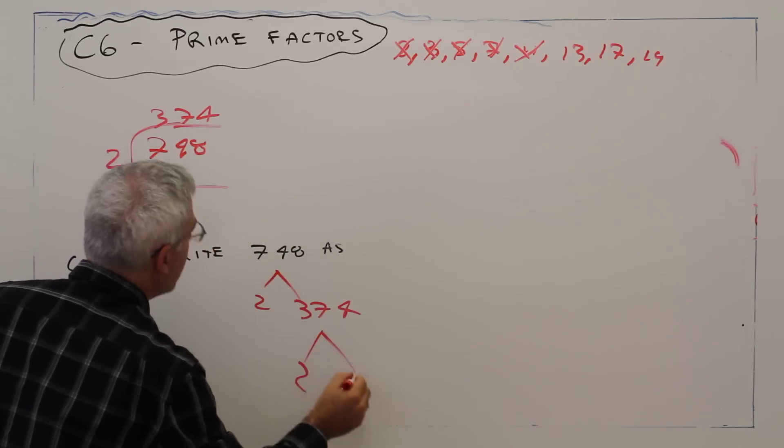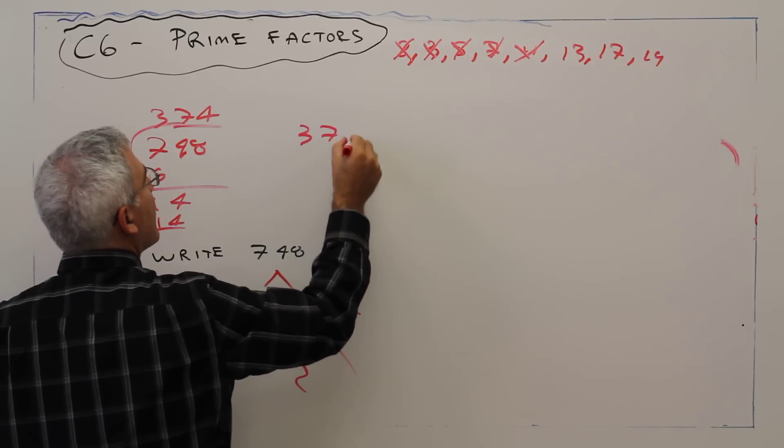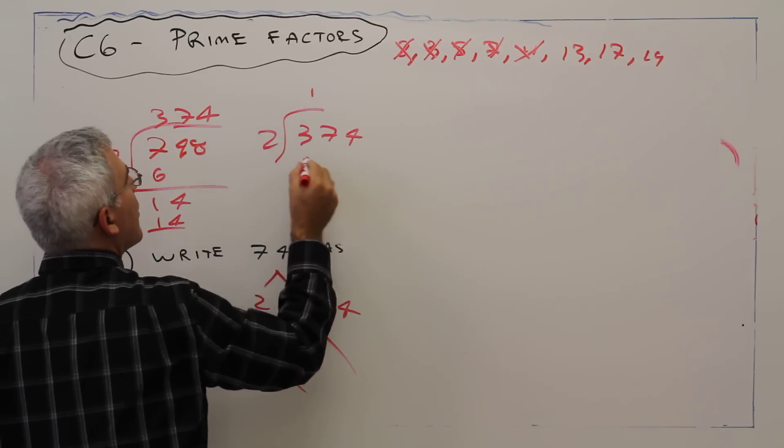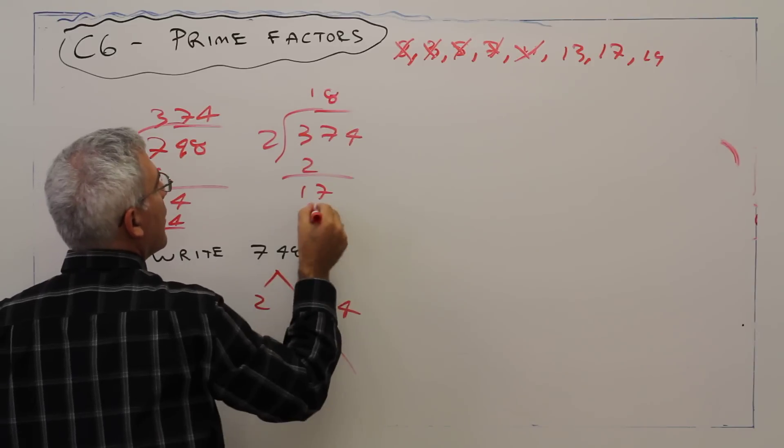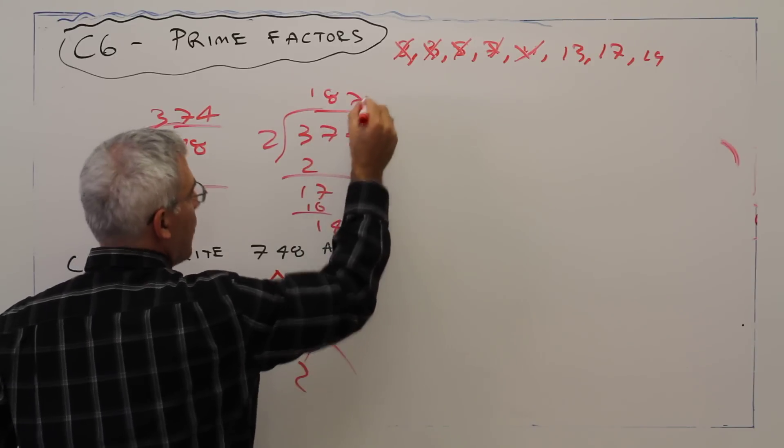So divide that by 2. 374 divided by 2, 1, 2, 1, 17, 8, 16, 14, 187.